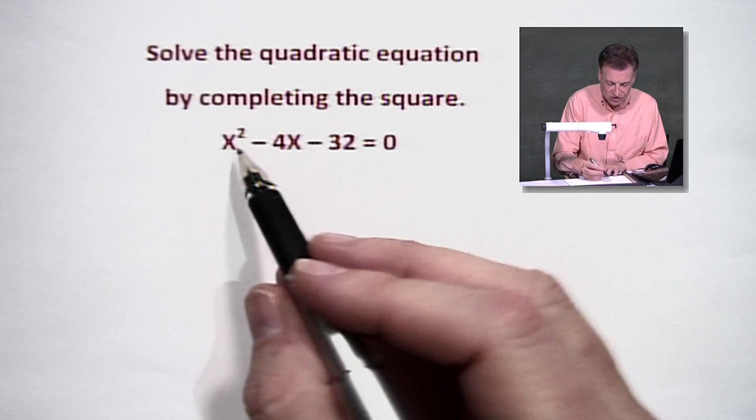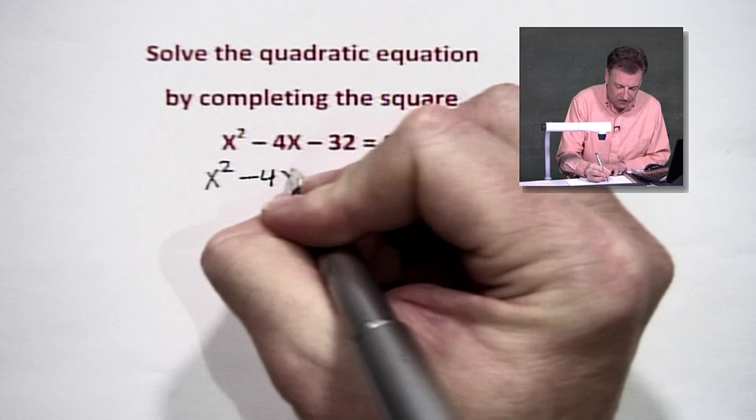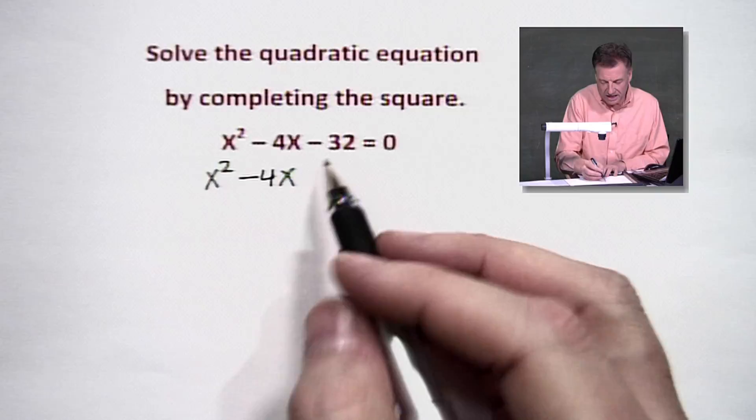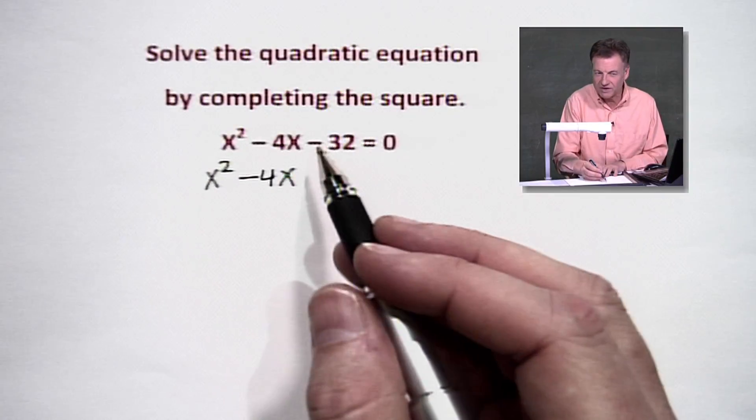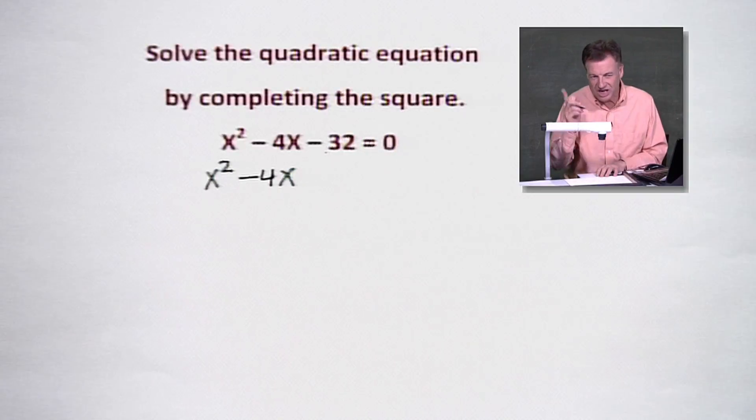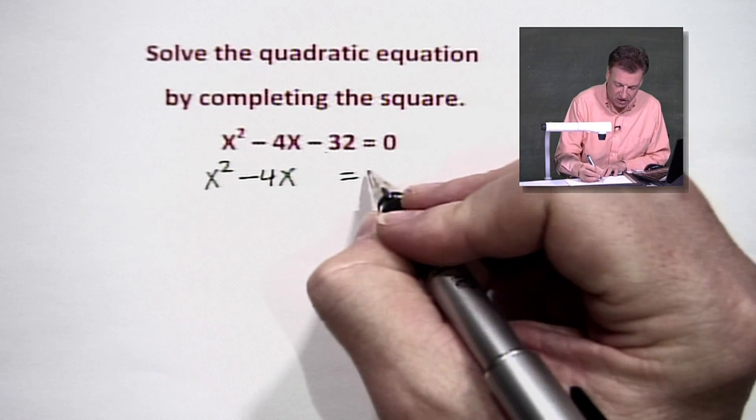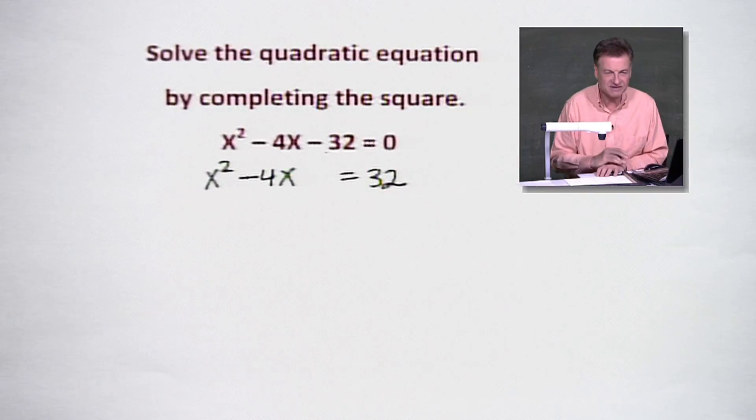First thing we want to do is simply have the x squared and the minus 4x all by their lonesome. So we need to move the 32 over. Now, it's minus 32. If it moves to the other side, it's got to change signs. So we're going to end up saying 0 plus 32. That's going to make it go positive out there. So that's our first step right there.